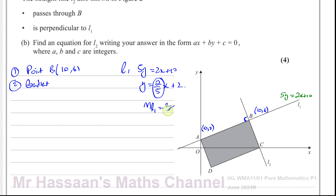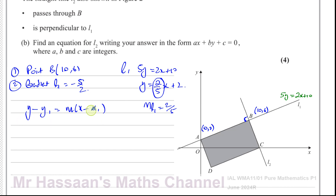Since L2 is perpendicular to L1, the gradient of L2 is the negative reciprocal, which is minus 5 over 2. For two perpendicular lines, their gradients multiply to give negative 1 — the fraction flips upside down and the sign changes. I strongly encourage students to use the formula y minus y1 equals m times (x minus x1) rather than y equals mx plus c.